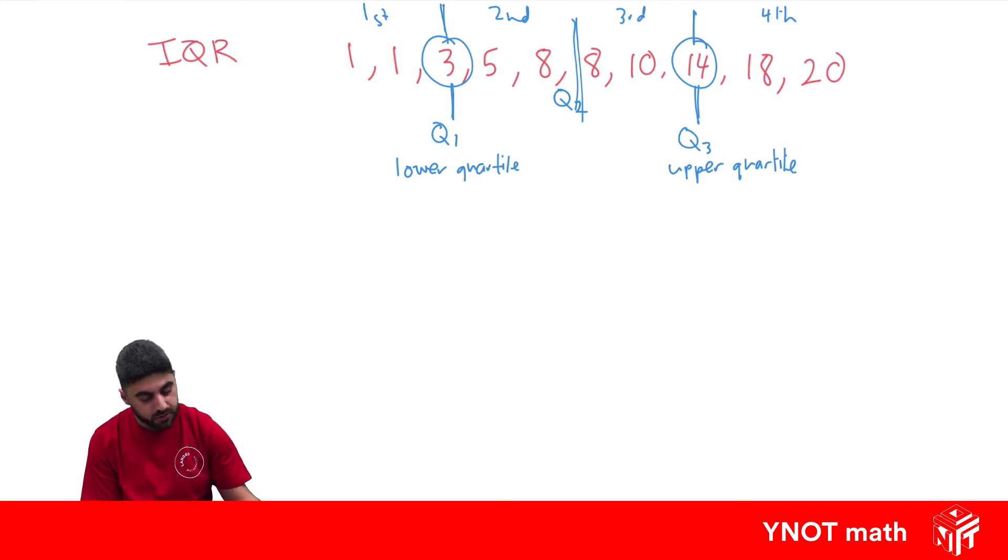To get the interquartile range, you just have to do Q3 minus Q1. In this case, Q3 was 14, Q1 is 3, and 14 minus 3 is 11.